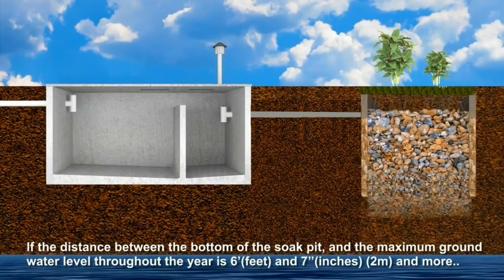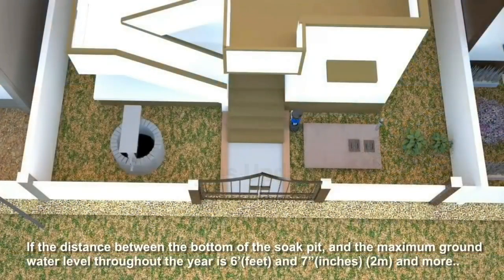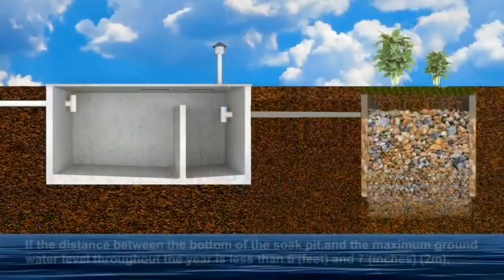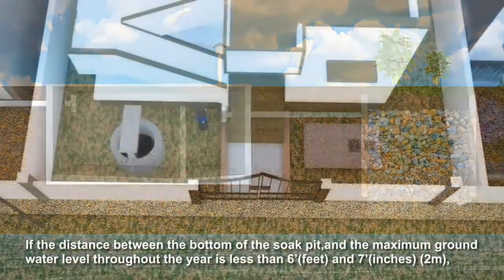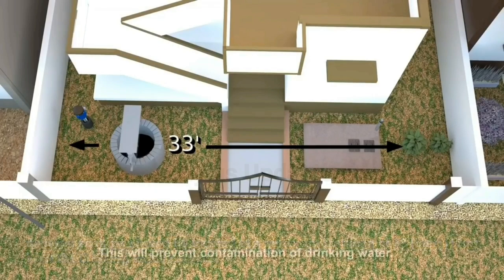If the distance between the bottom of the soak pit and the maximum ground water level throughout the year is 6 feet 7 inches or more, then the soak pit should be located at a minimum distance of 9 feet 11 inches from drinking water sources. If the distance between the bottom of the soak pit and the maximum ground water level throughout the year is less than 6 feet 7 inches, then the soak pit should be located at a minimum distance of 33 feet from drinking water sources. This will prevent contamination of drinking water.